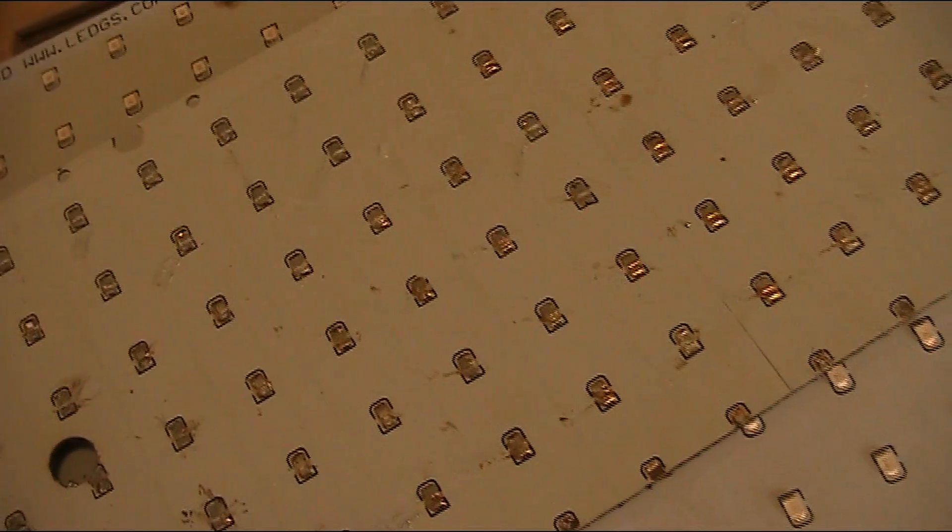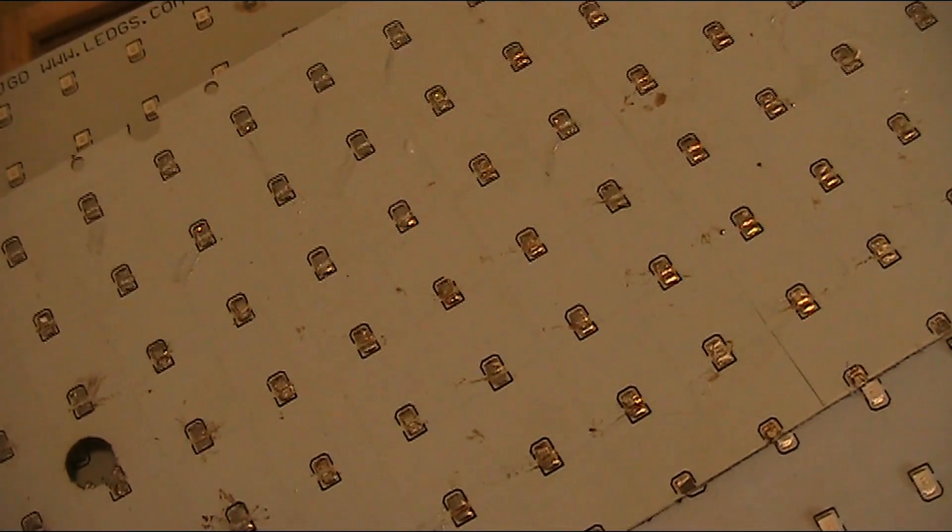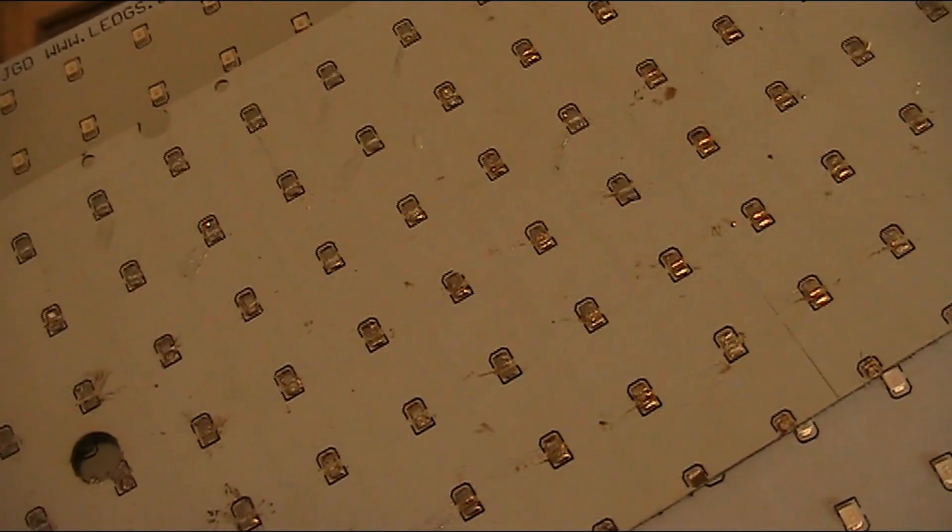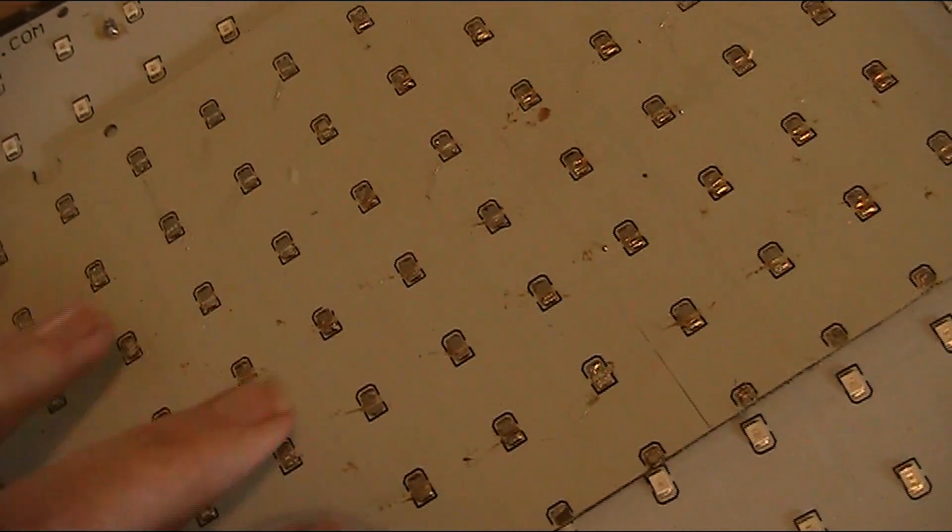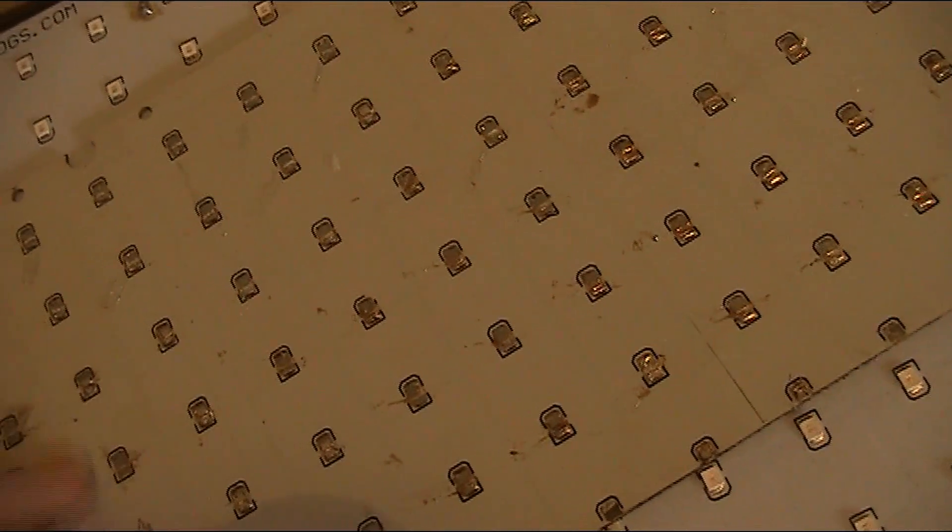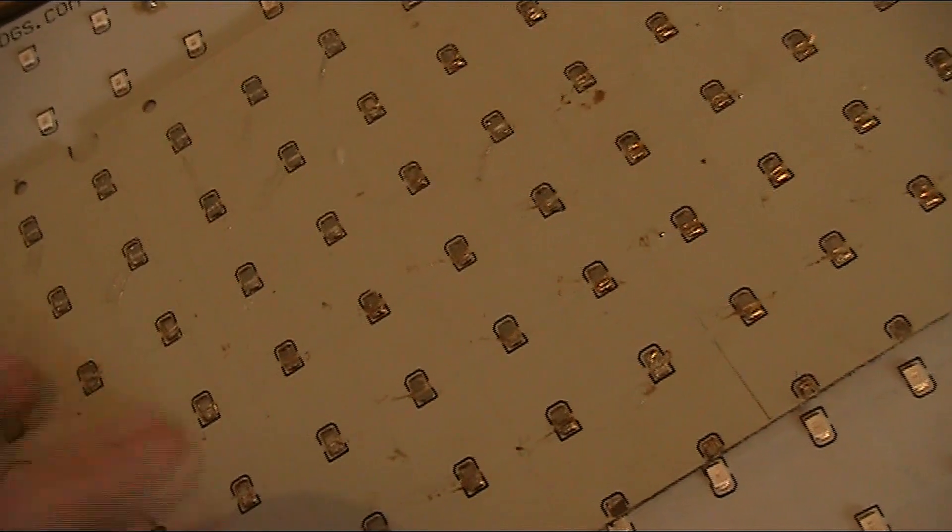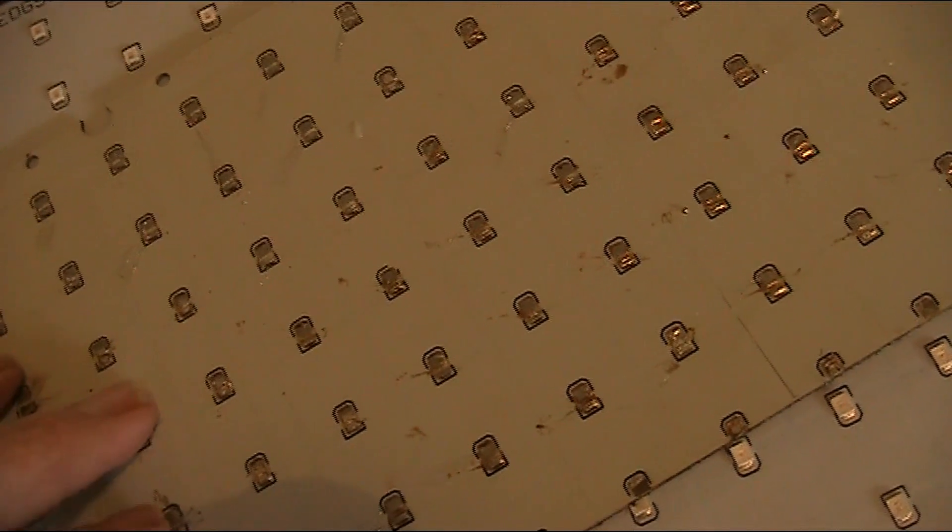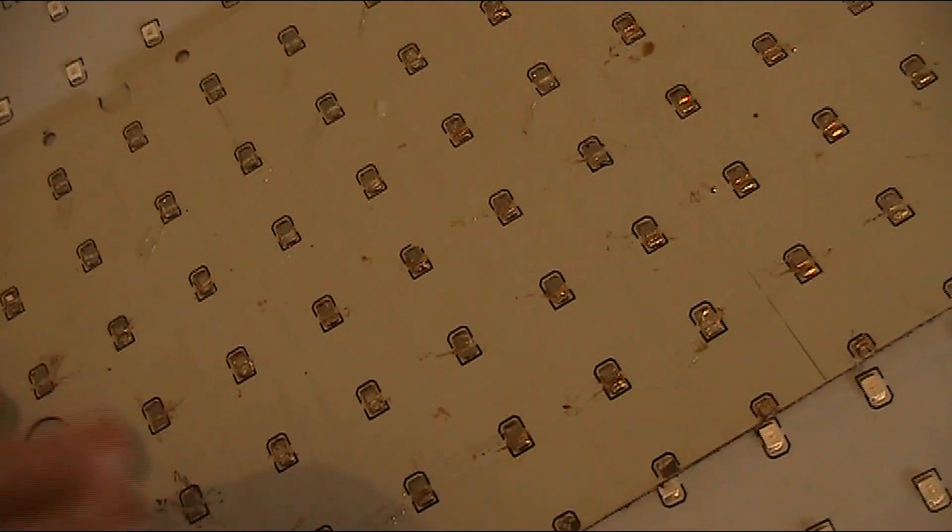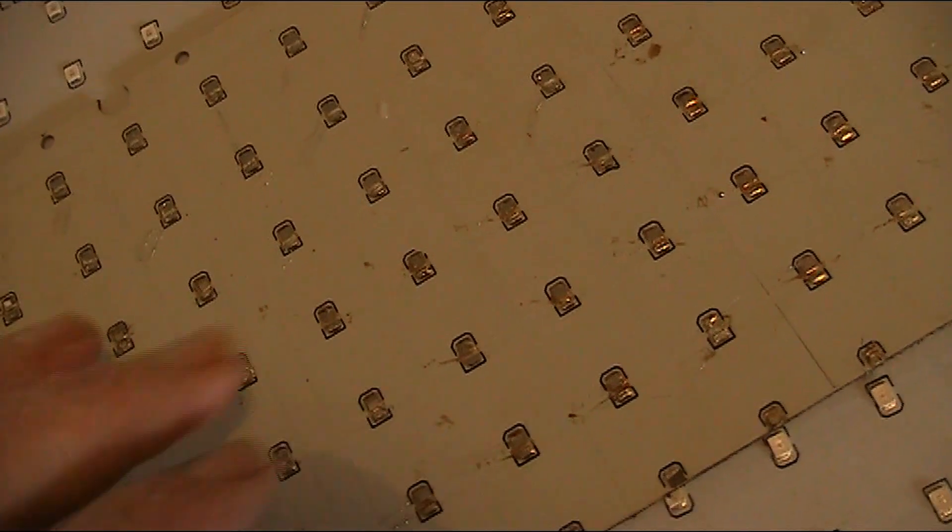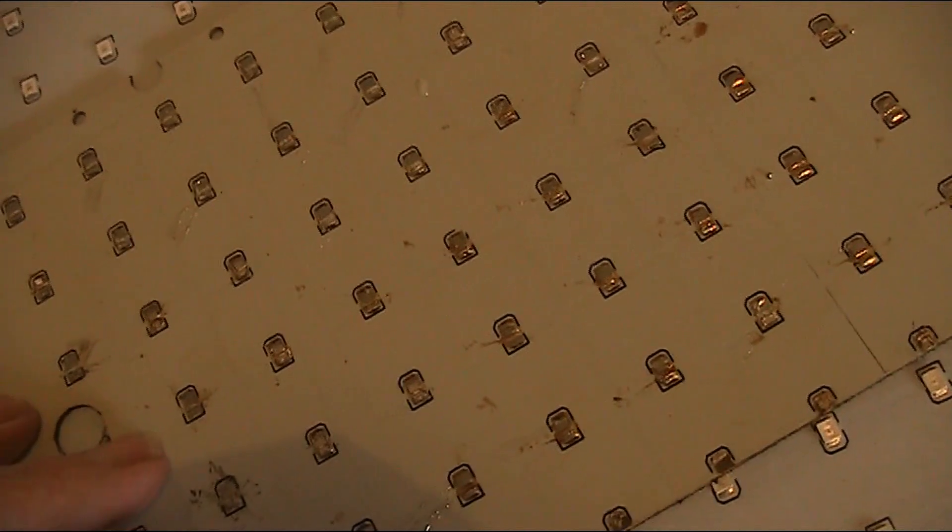The smells from this can be pretty noxious so make sure you do this where there's ventilation. And it might take a couple of goes in the oven to remove all the LEDs. Because the thing is so hot you can easily remove them for the first half but it cools down pretty quickly so you might need to put them in the oven for a second go and remove all the rest.